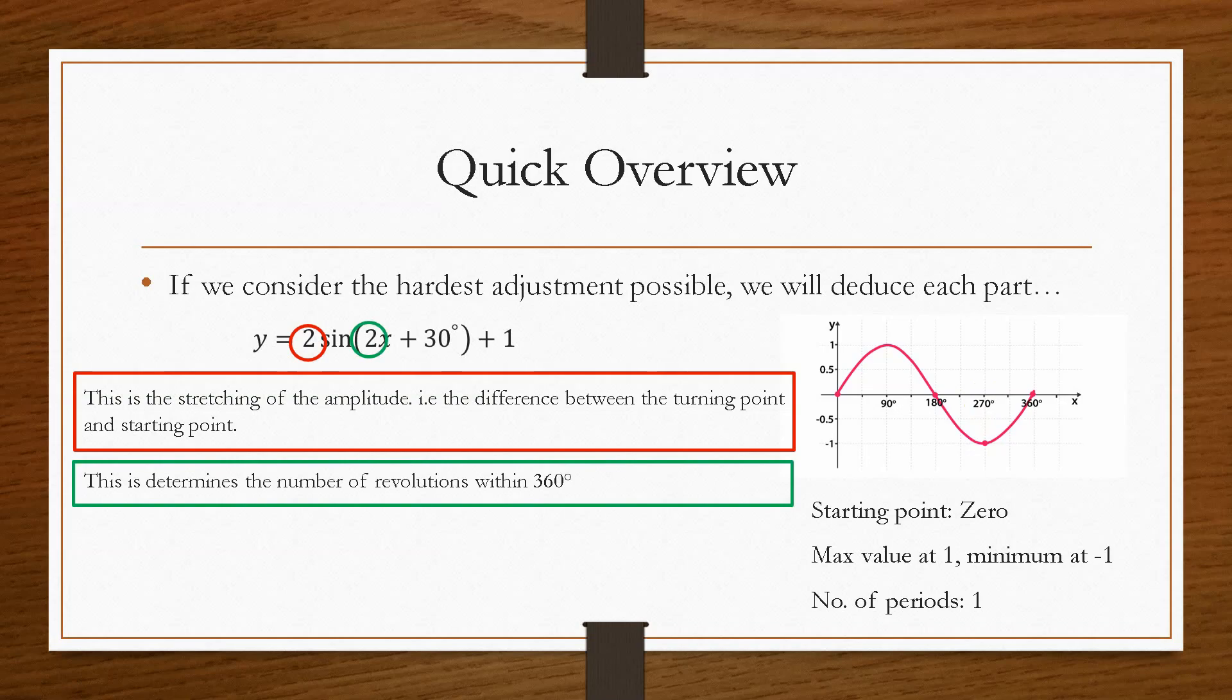The 2, if it multiplies the x, determines the number of revolutions within 360 degrees. So if we have a 2 here, it means we'll have 2 revolutions. So instead of it being from 0 to 360, this 1 revolution would be from 0 to 180, because we'd have to do 2 of these. Likewise, if that was 5x, then we'd have 5 revolutions within 360 degrees.